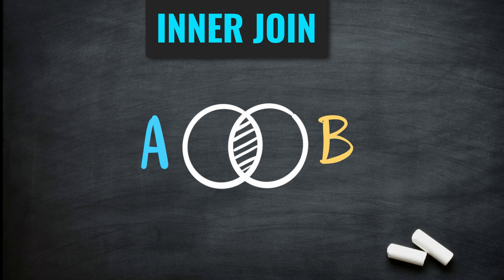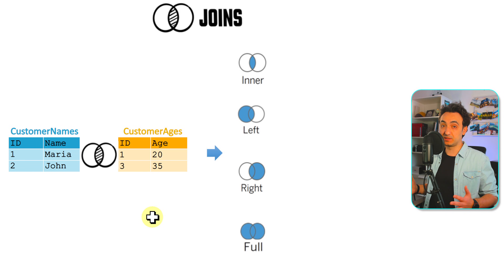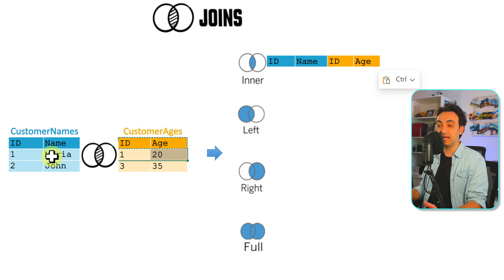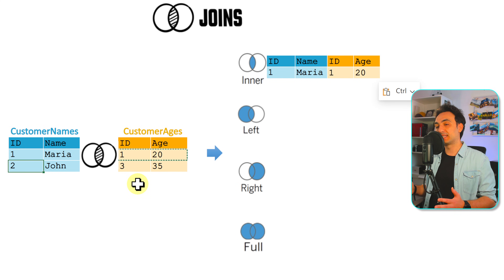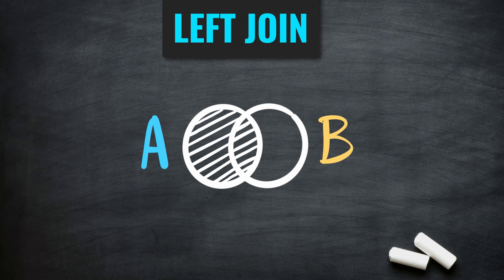Inner join shows only the matching rows from both the left and right tables — any unmatching rows will not appear in the output. We start by combining the fields, then we match rows. Customer ID 1 exists in both tables, so it appears in the output. Customer ID 2 only exists on the left, and customer ID 3 only on the right, so neither matches. With inner join, we get only customer ID 1.